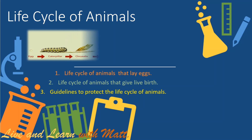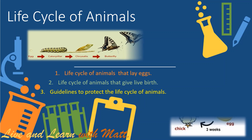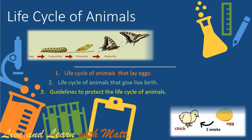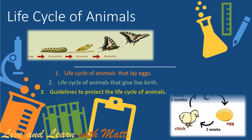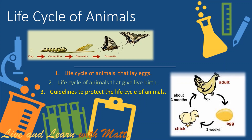A life circle are the stages a living thing goes through during its life. Animals change in shape, size, and grow all through their life. How do animals change as they grow into adults? The life circle of animals is grouped into two types: animals that give birth to their young, and animals that lay eggs.